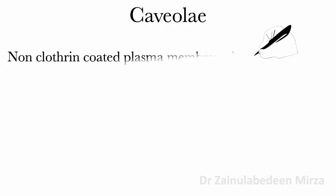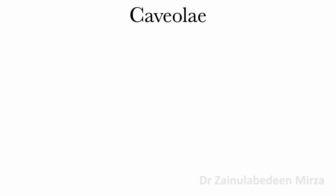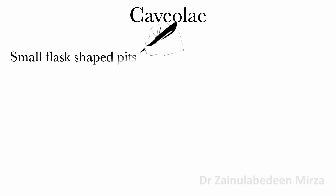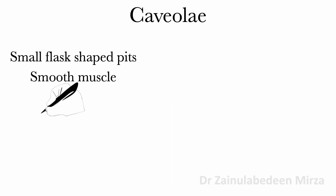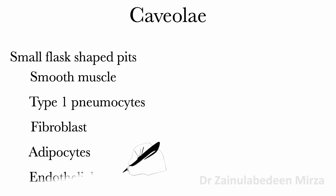Caveolae are non-clathrin-coated plasma membrane buds which are present on the surface of many cells. Caveolae consist of the cholesterol-binding protein called caveolin, with a bilayer enriched in cholesterol and glycerolipid. Caveolae are small, about 50 nanometres in diameter, flask-shaped pits in the membrane, and they are abundant in smooth muscle, type 1 pneumocytes, fibroblasts, adipocytes, and endothelial cells.